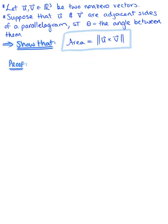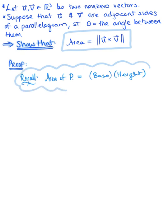We want to verify that the area of a parallelogram whose adjacent sides are defined by vector u and vector v, with theta being the angle in between, is equal to the magnitude of the cross product of vector u and vector v. Before we begin, let's recall: the area of a parallelogram is equal to base times height. We'll keep this geometric formula in mind as we proceed.